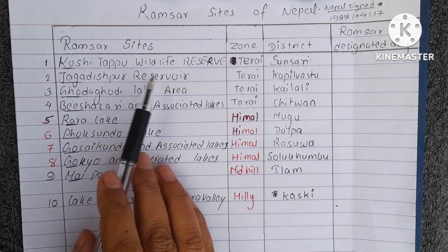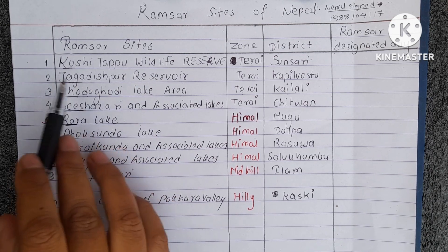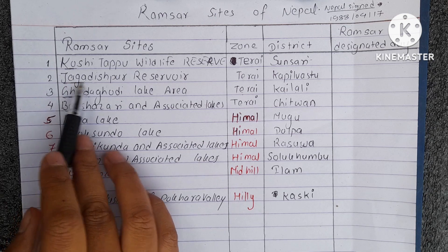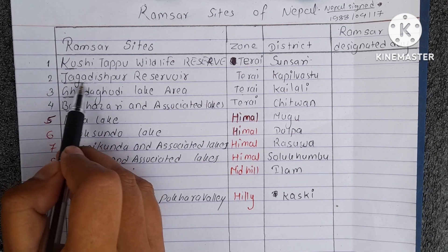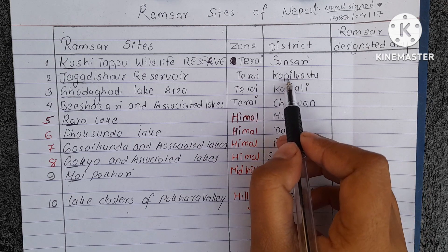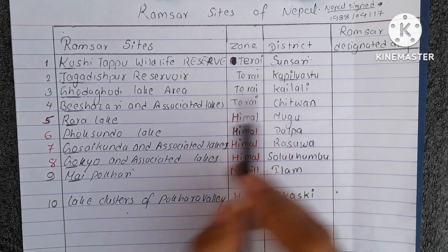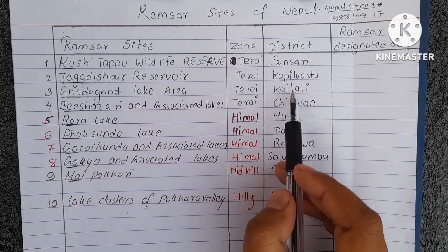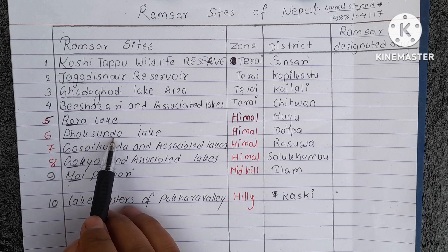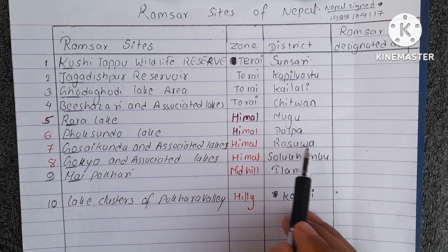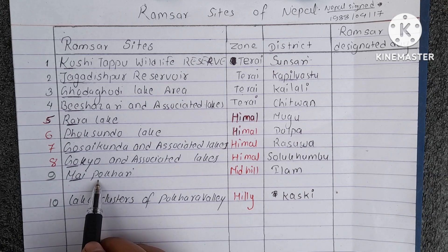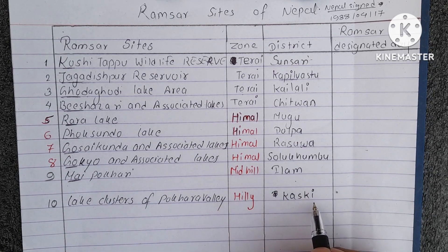Jagadishpur Reservoir is in Kapilvastu district — you can remember 'Jagadish' from the bhajan 'Om Jai Jagadish.' Godagodi Lake Area is in Kailali. The 20,000 Associated Lakes are in Chitwan. Rara Lake is in Mugu. Phoksundo Lake is in Dolpa. Gosaikunda Associated Lakes are in Rasuwa. Gokyo Associated Lakes are in Solukhumbu. Mai Pokhari is in Ilam. Lake Cluster of Pokhara Valley is in Kaski.